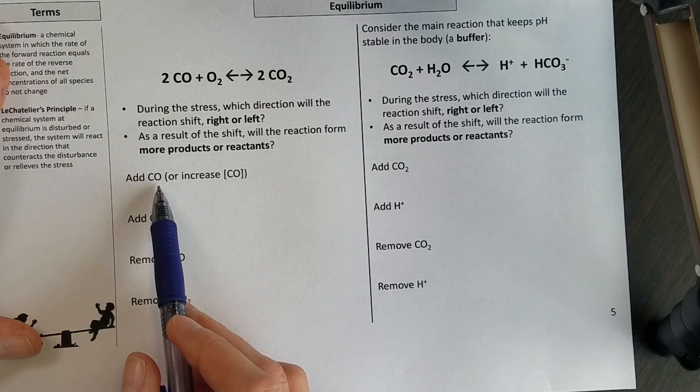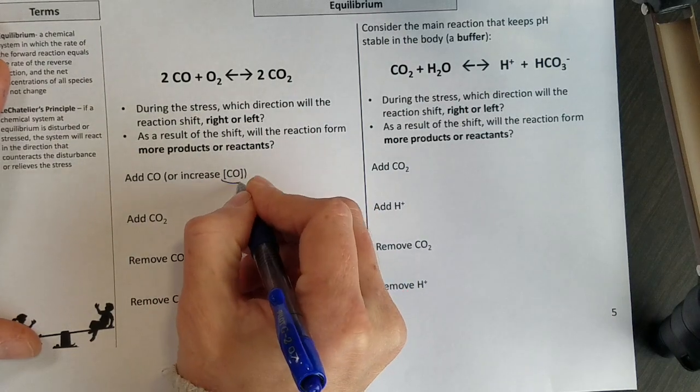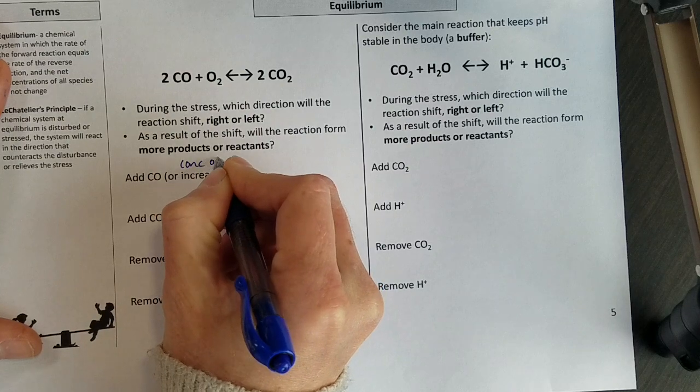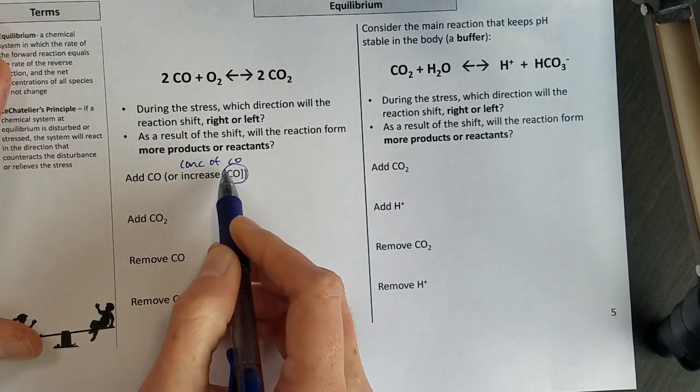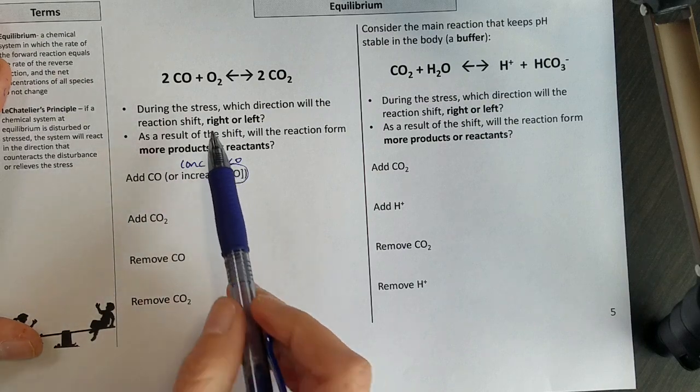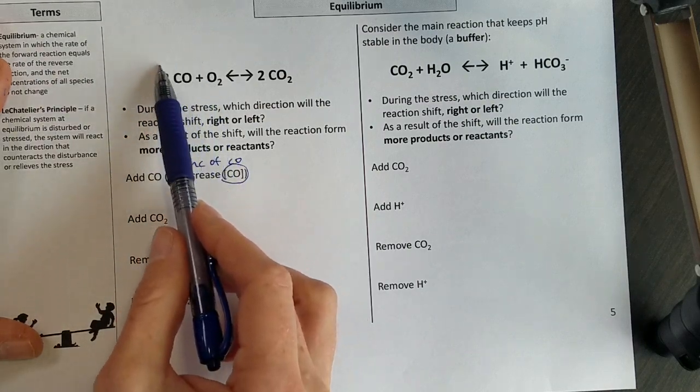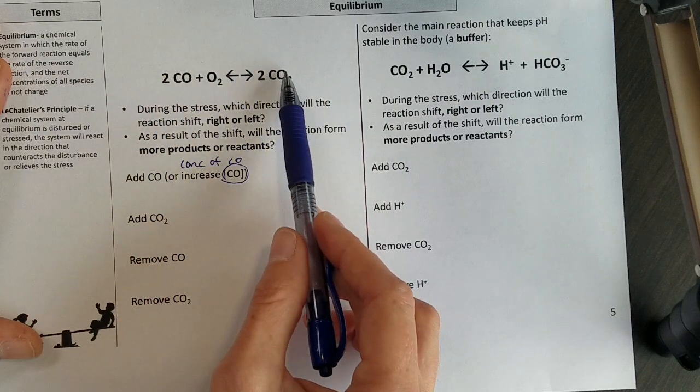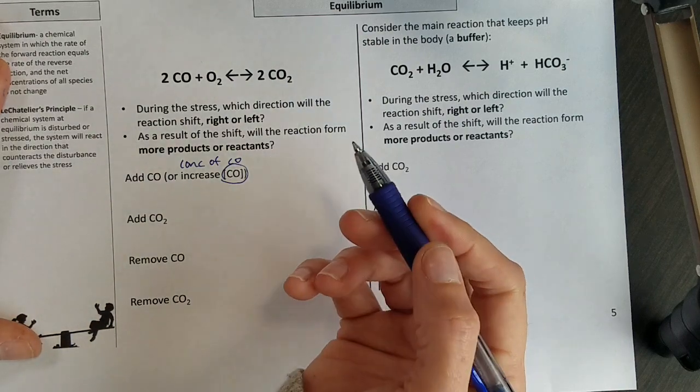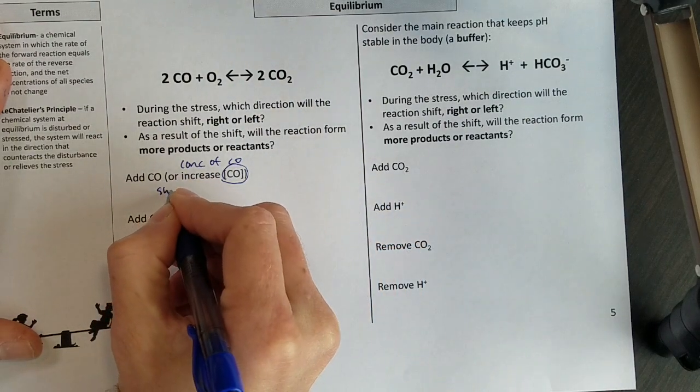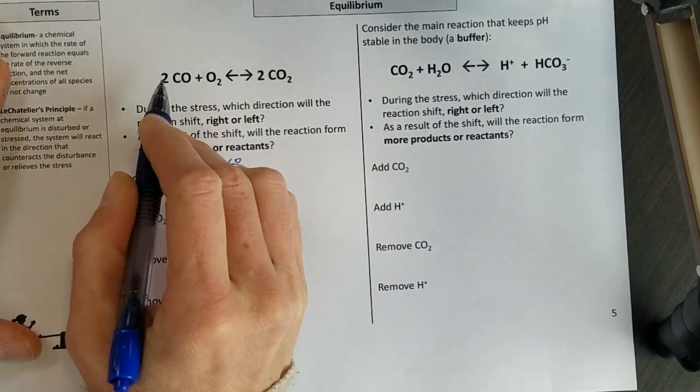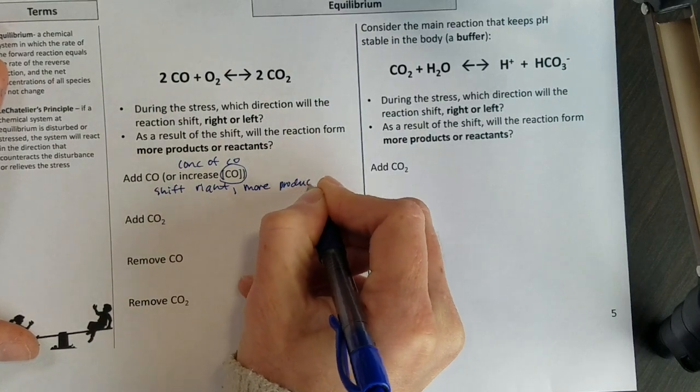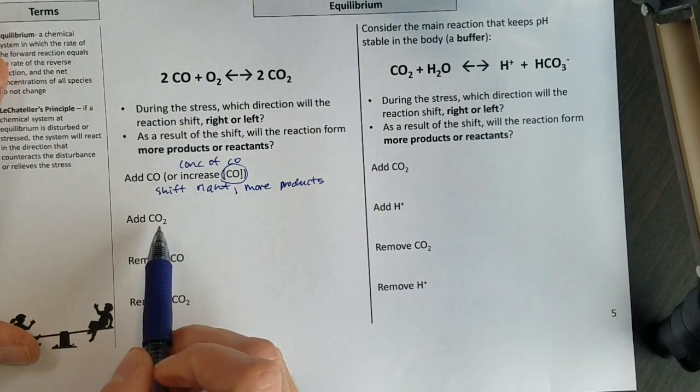So if I add carbon monoxide, or another way you'll see this written is increase brackets of carbon monoxide, and that just means concentration of CO is what that bracket means. If I add a lot of CO, then I say, I've been working too much, I need to rest. I have too much CO, I need to convert some into that other product. So I would shift right to undo that stress. And when I shift right, I'm going to make more products, carbon dioxide.